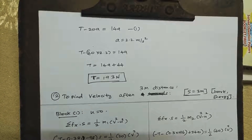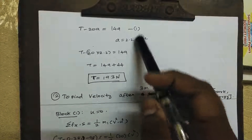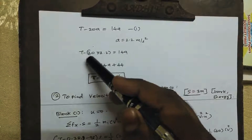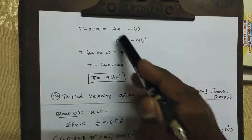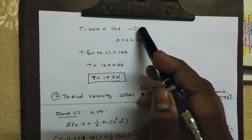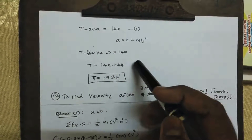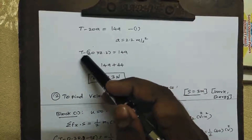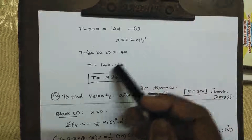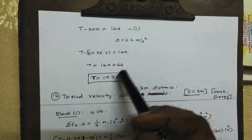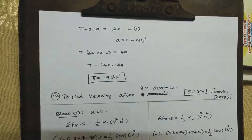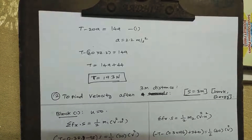After finding the value of acceleration, a equals 2.2 m/s². Substituting back into the first equation: T minus 20 times 2.2 equals 149, giving T minus 44 equals 149. The value of tension is 193 Newtons, by Newton's law of motion.